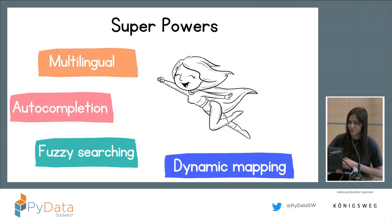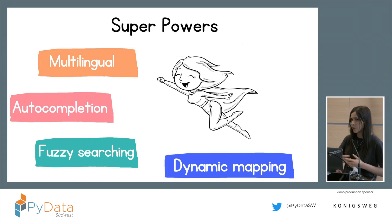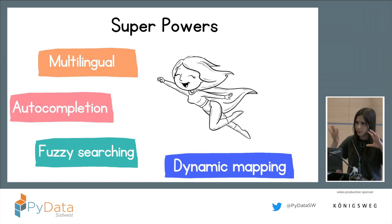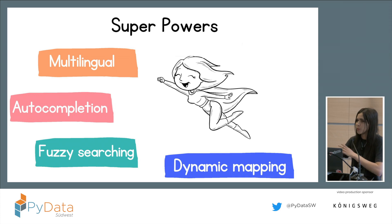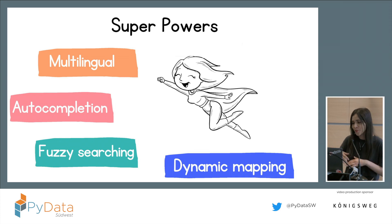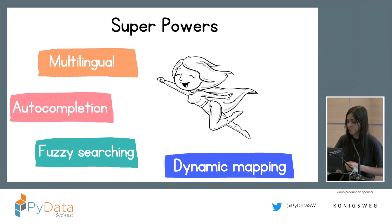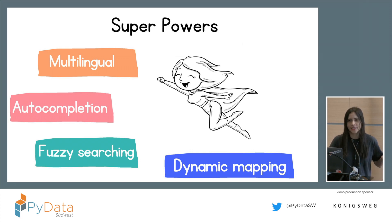The last superpower I'd mention is dynamic mapping, which means you don't need to specify all fields or have a schema ready when sending data to OpenSearch. You can just send data and OpenSearch will try to figure out the field types from what you sent. You can also configure the mapping beforehand, but dynamic mapping is really cool.